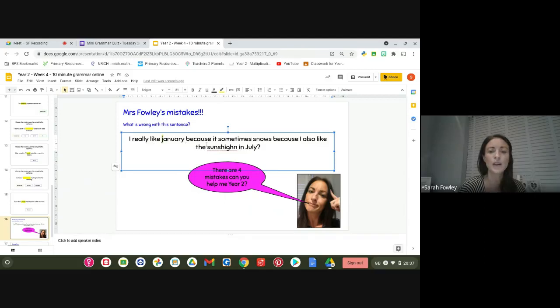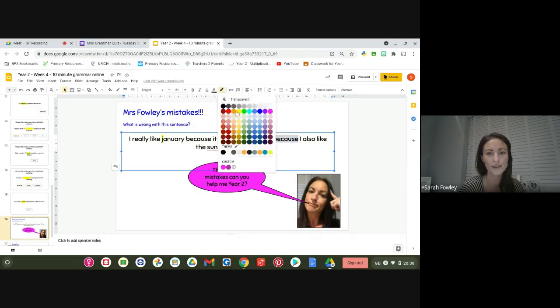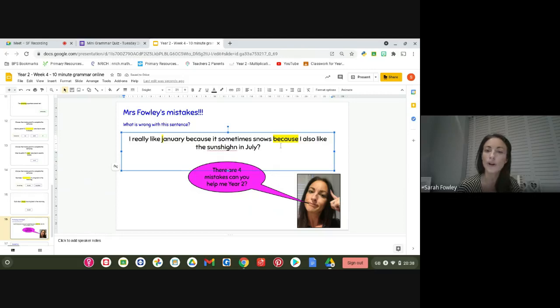Let's carry on. I really like January because it sometimes snows because I also like, oh, that sounds a bit strange. It doesn't sound like my sentence makes sense. And I've used because twice. I know what I've done year two. Do you know what I've done? I've used the wrong conjunction. This should say and not because. Sometimes we really need to think about what conjunction we use in our sentence to make sure that it makes sense.